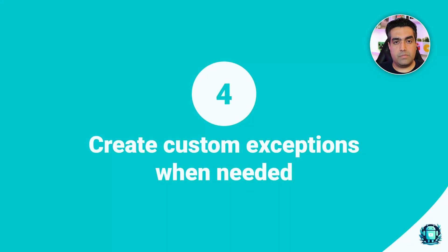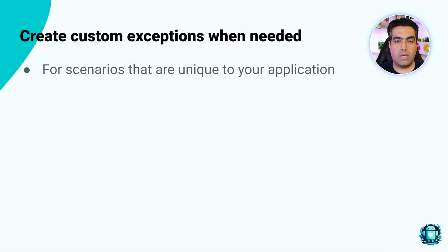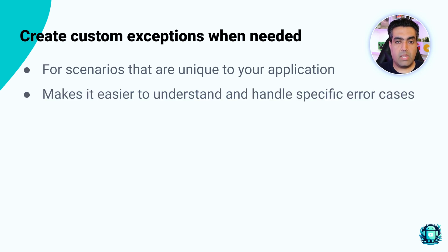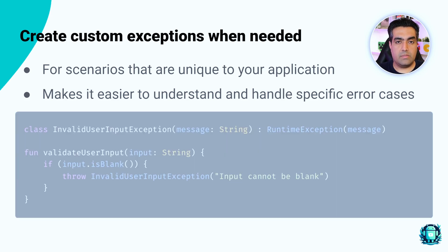Number four: create custom exceptions when needed. For scenarios that are unique to your application — domain-specific or complex error scenarios where additional context is beneficial — create custom exceptions. This makes it easier to understand and handle specific error cases and helps with code clarity. Here is an example of a custom exception defined for cases where user input is invalid.